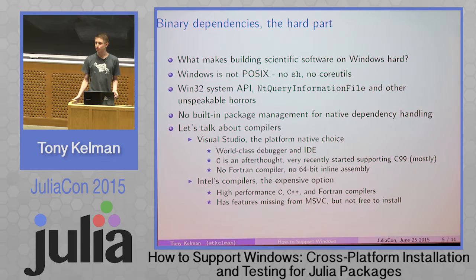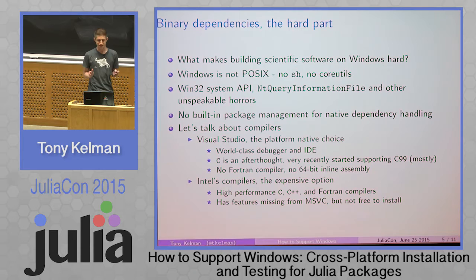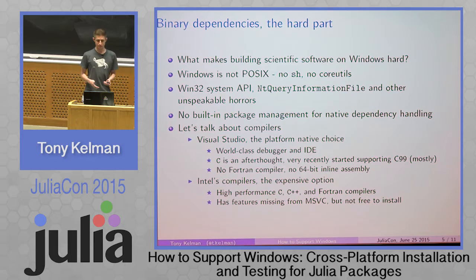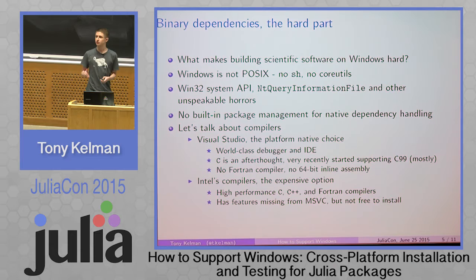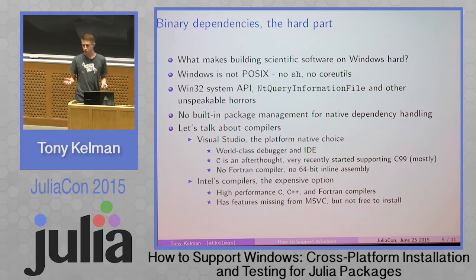Let's talk about compilers. Visual Studio is the platform-native choice — the compiler the people who make the operating system also make. The debugger and IDE are amazing. But C is an afterthought in Visual Studio: C99, the standard C you probably don't even realize you code in, has not been supported by Microsoft until very recently — embarrassingly recently. There's no Fortran compiler in Visual Studio because Microsoft does not care about the scientific community. You can't build Julia, SciPy, Octave, or MATLAB without a Fortran compiler, and this, I hope, will change — but it's sort of active research, and Julia and LLVM might play a part in it.